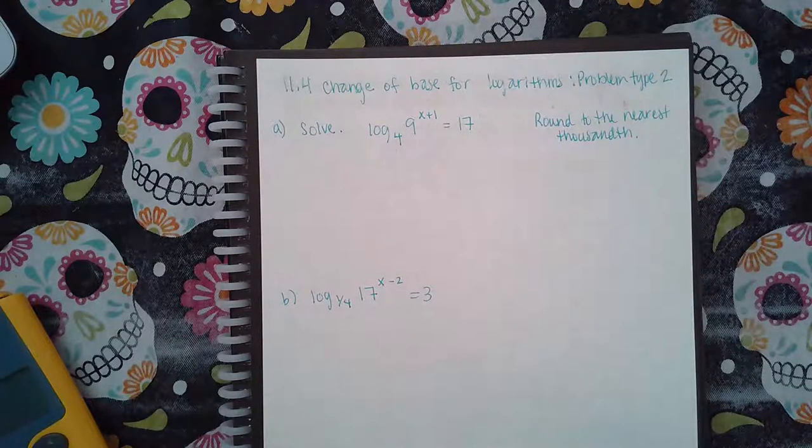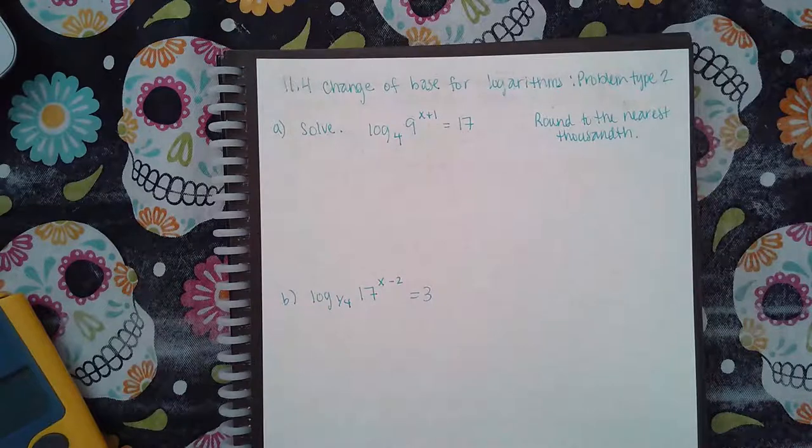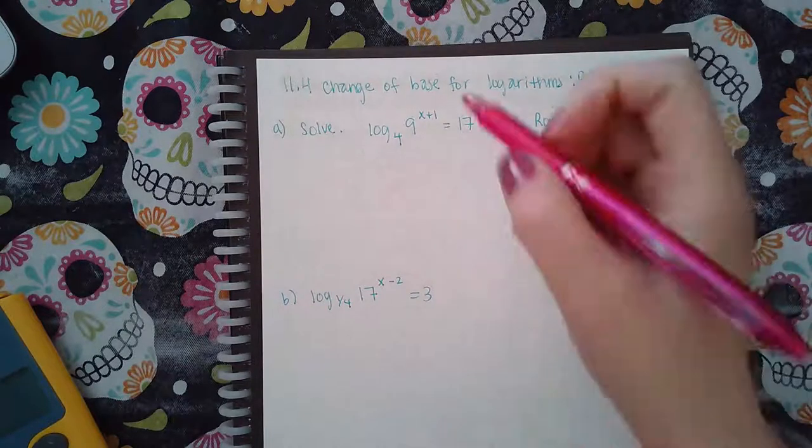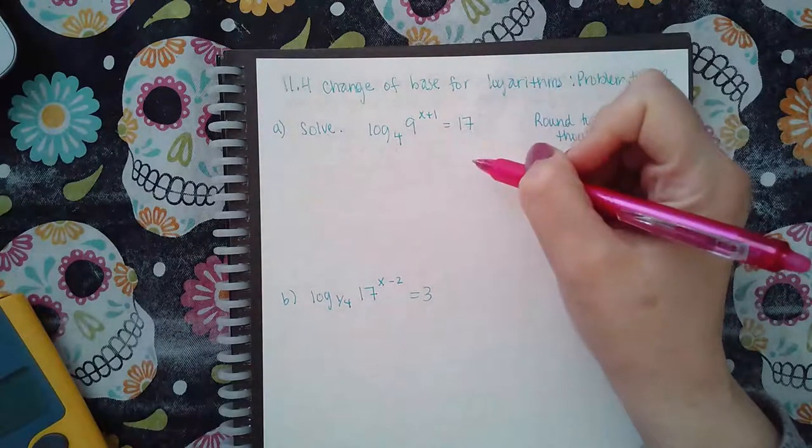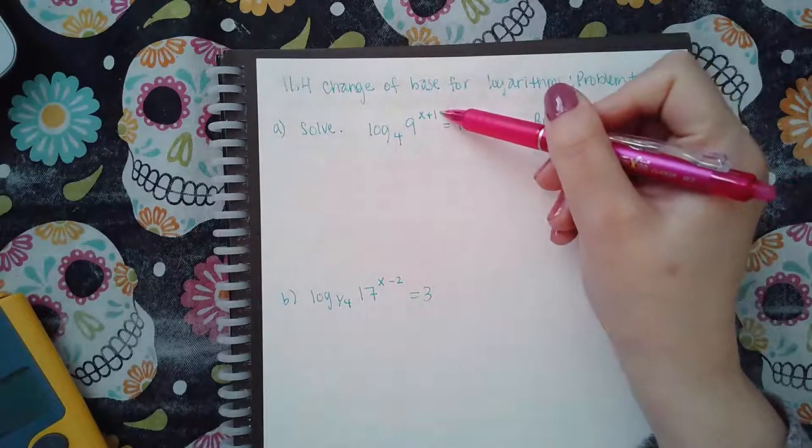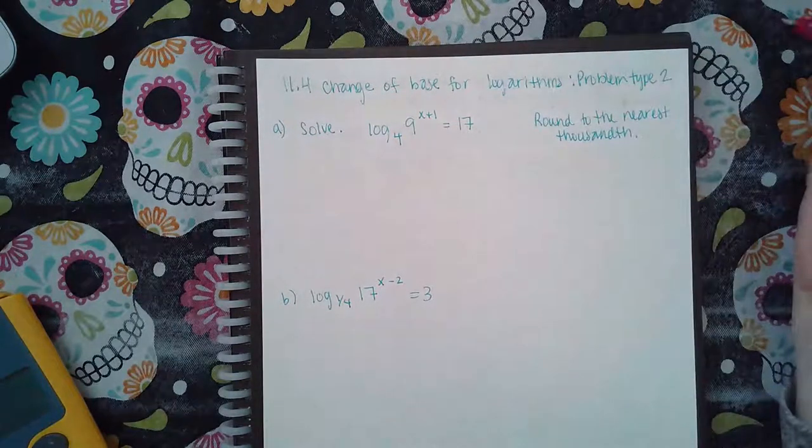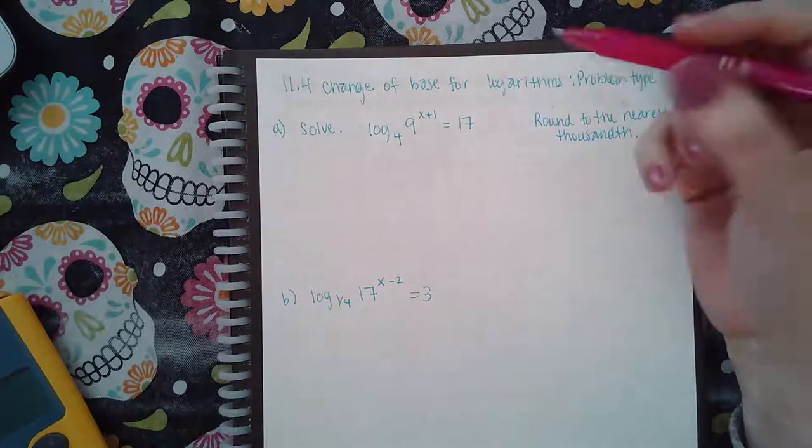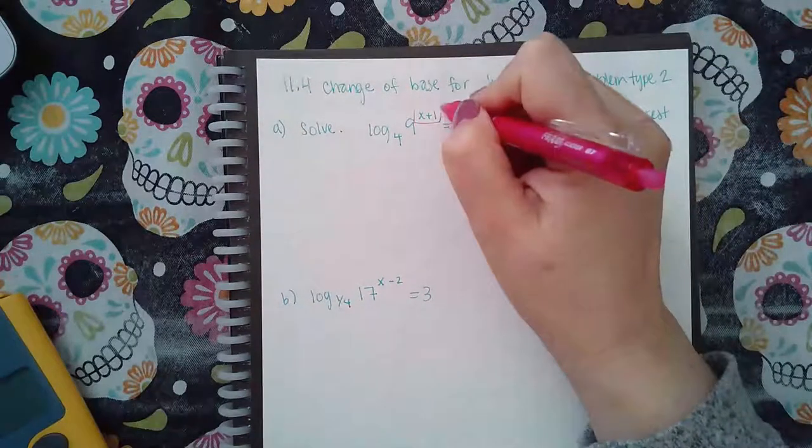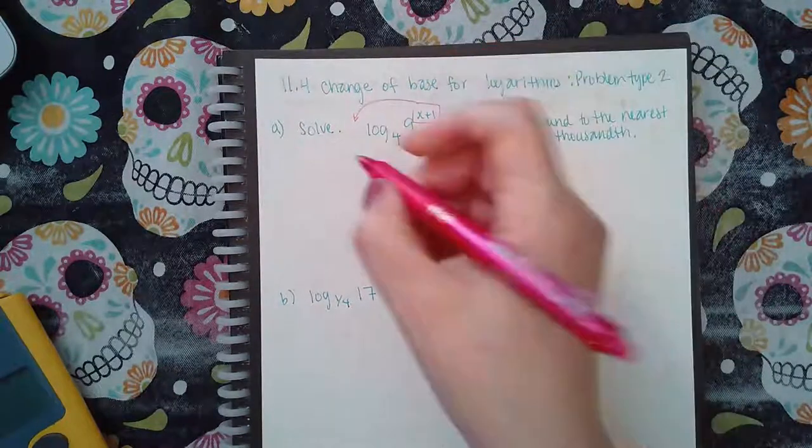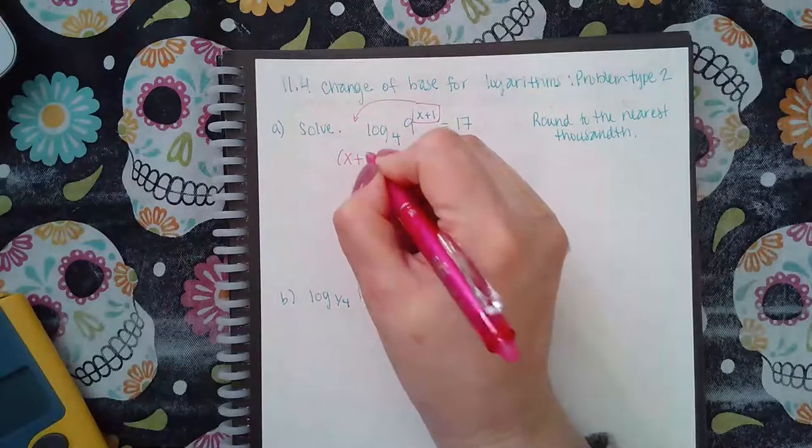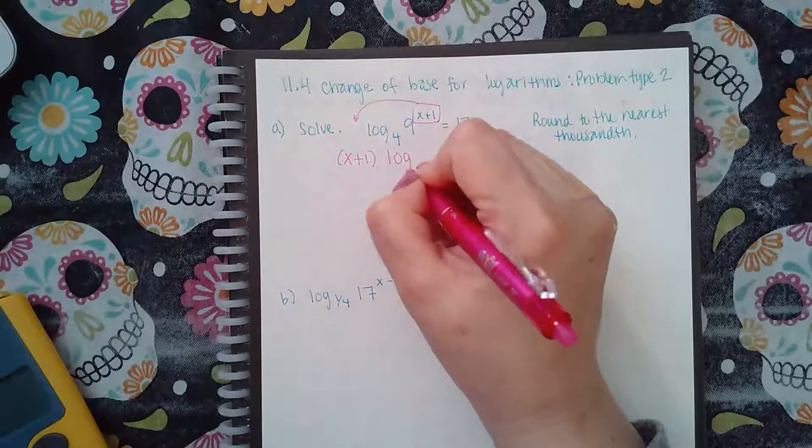Okay, so now we have a base logarithm from type 2, so I do need to change the base, but I do have an exponent here. So normally when you're trying to handle exponents, you take the exponent and bring it to the front. So that becomes X plus 1, and then log to the fourth power of 9.